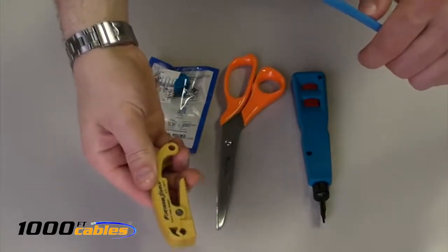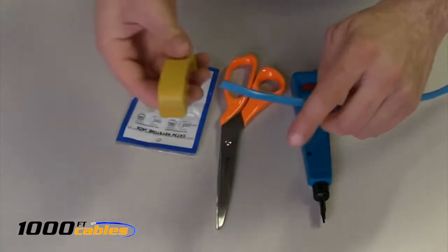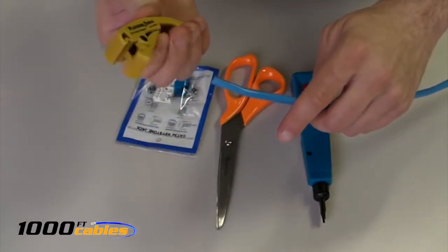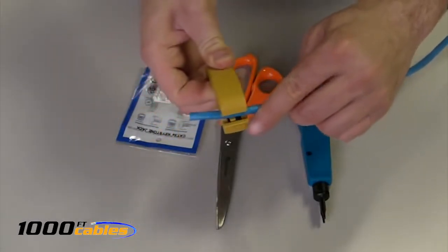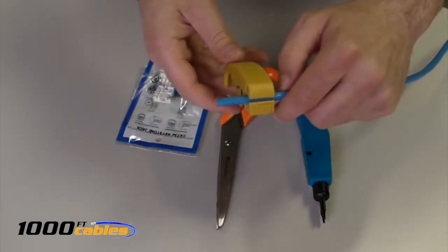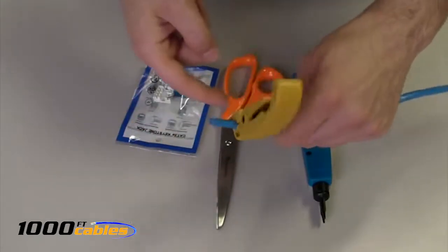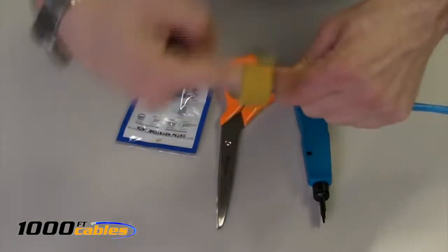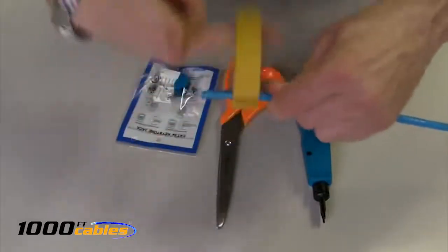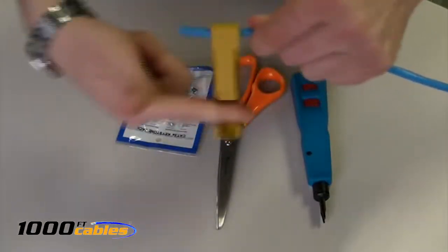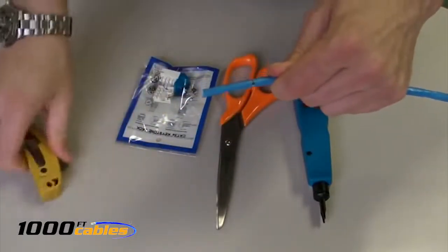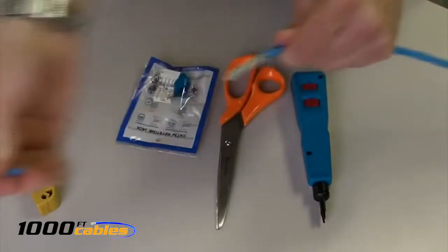Next you want to take your Cat5 stripper and your Cat5 cable. You open it up by squeezing the back of it, slide it in there, slide it about an inch and a half in. You take your finger, put it underneath here and just twist. This will strip the protective coating off of the cables like so.